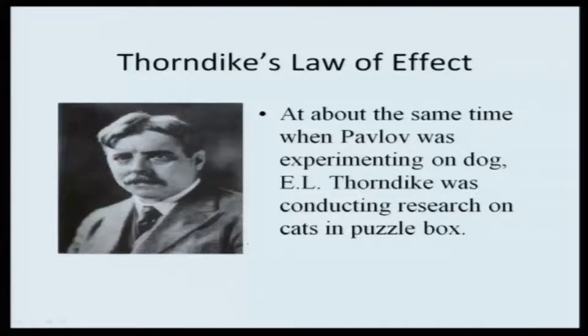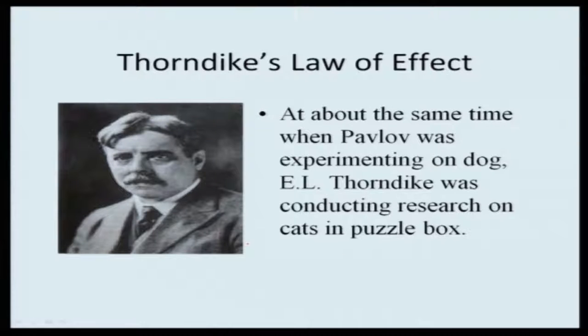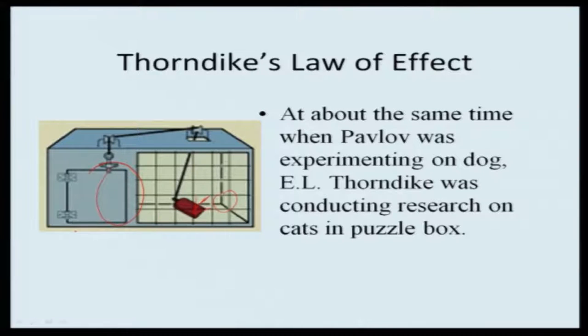Around the same time Pavlov was experimenting on dogs, E.L. Thorndike was conducting similar research using cats in a puzzle box. The mechanism was simple: a cat was put inside a cage and was supposed to press a lever; the moment the lever was pressed, the door would fling open and the cat could come out.